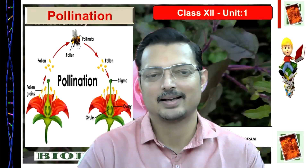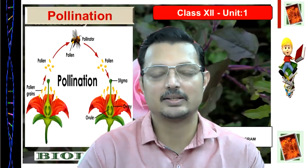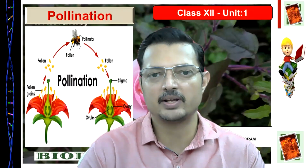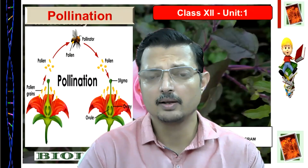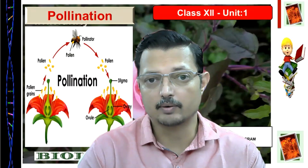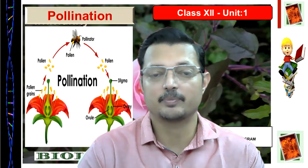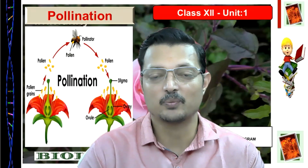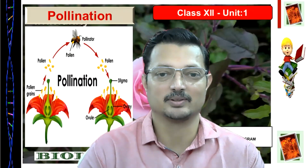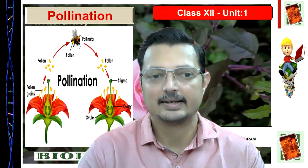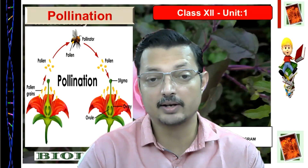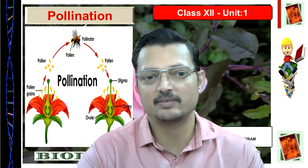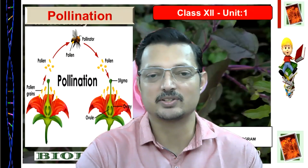Welcome students. As we are dealing with sexual reproduction in flowering plants, we have seen various events like the structure of a flower, formation of gametes, microsporogenesis, and megasporogenesis. Since the pollen grain has been formed, what comes next? Next is the transfer of pollen grain from anther to stigma. We'll see how it is achieved — that is called pollination.